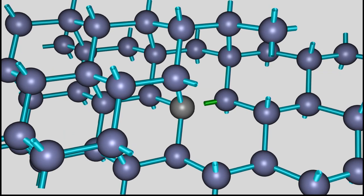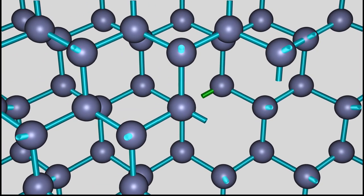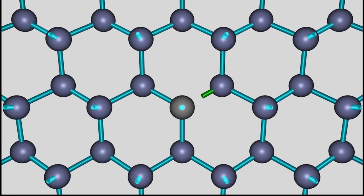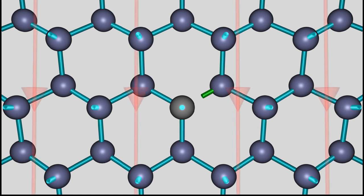Let's connect the crystal lattice to a DC voltage source. The positive terminal is at the top of the crystal and the negative terminal at the bottom. As soon as an electric field is established, the energy level of the hole differs depending on its position around the impurity atom.